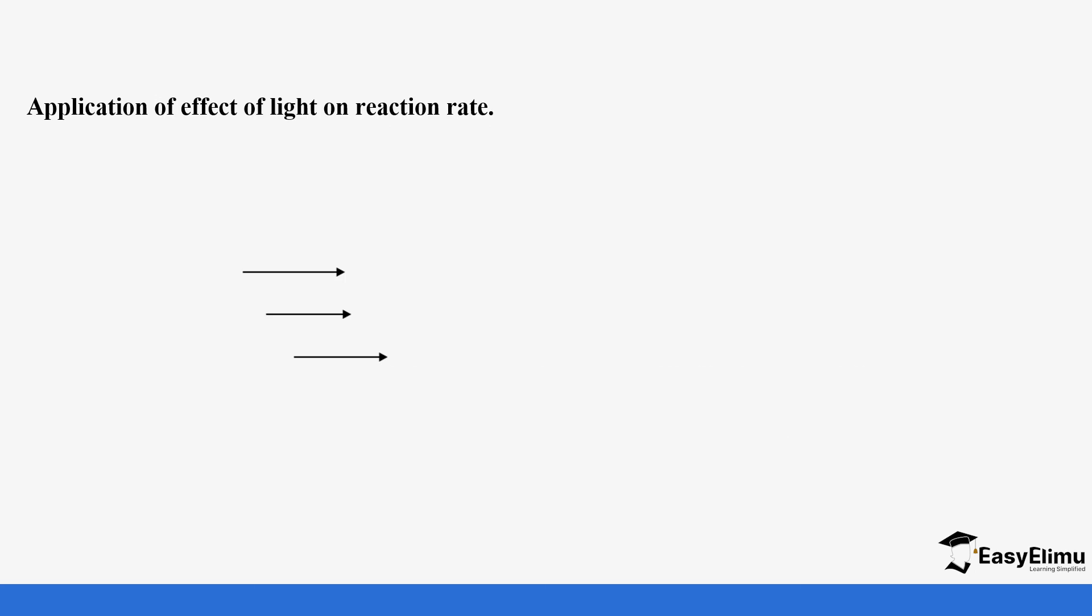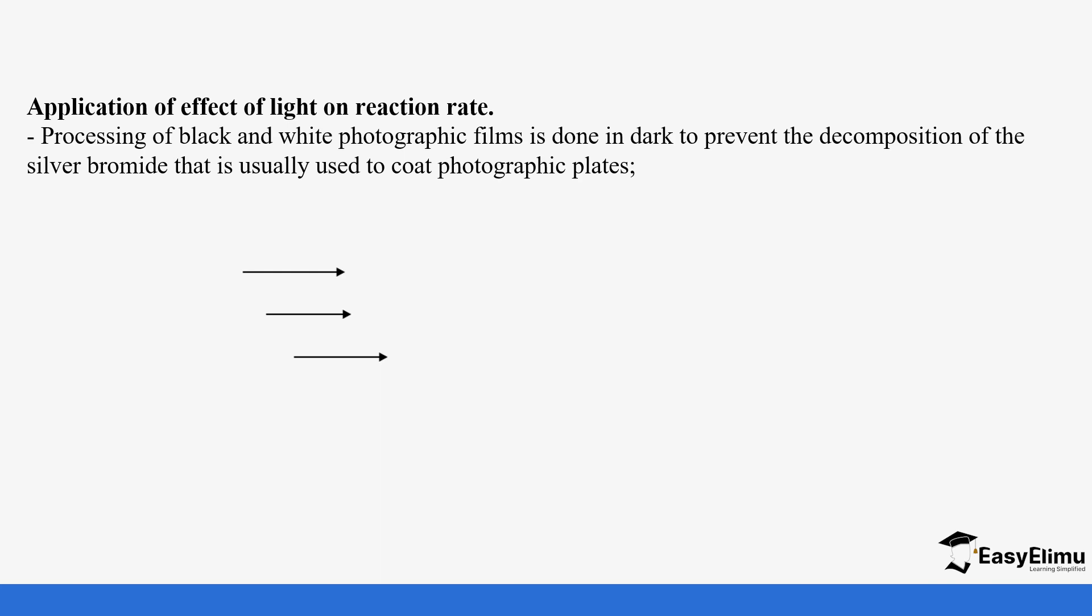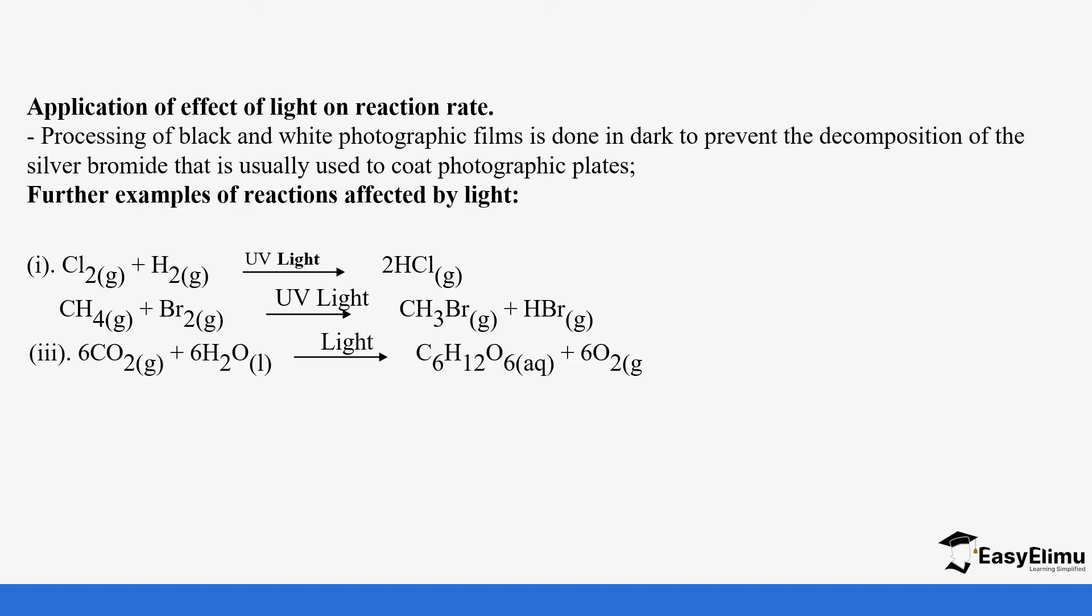Other applications of effects of light on rate of reaction include processing of photographic films. It's usually done in dark places. That's why they have those dark rooms, because we don't want the decomposition of silver bromide that is used to coat photographic plates. Other examples include the reaction of chlorine with hydrogen, the reaction of alkanes with halogens, and the reaction of carbon dioxide and water in presence of light as in photosynthesis, the production of sugar.